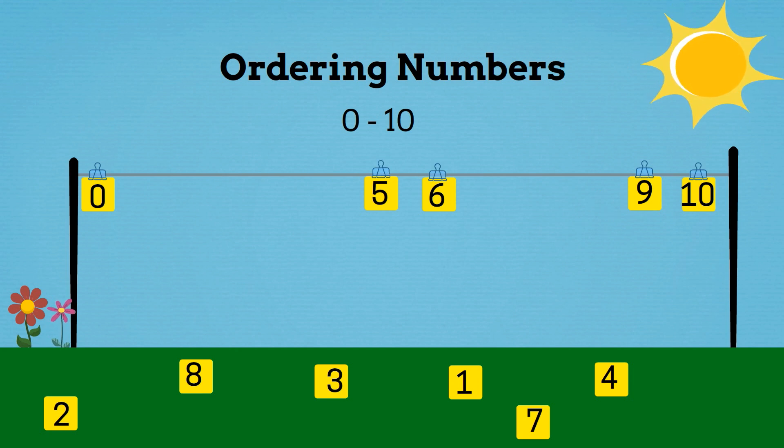Now what number is 1 less than 5? It's 4. 4 is 1 less than 5. So we'll put 4 before 5.